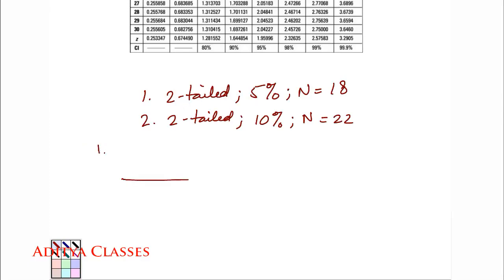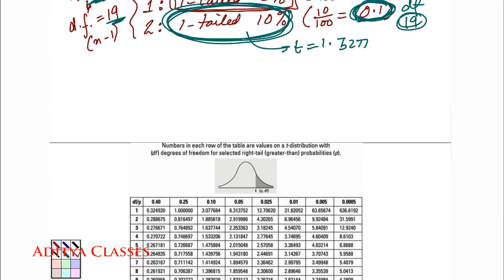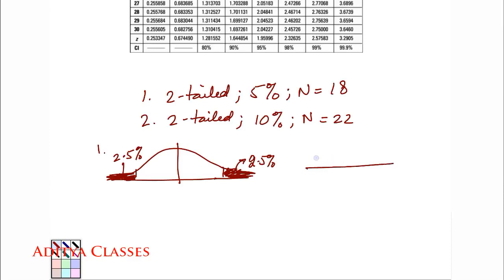Two-tailed 5%, with n is equal to 18. And second, let us solve 2-tailed 10%, with n is equal to 22. So now, let me pick first one. Two-tailed 5%, so because there are two tails, so I will be having two tails over here, a tail on either side. So this becomes a two-tailed distribution.